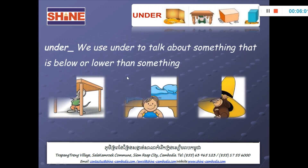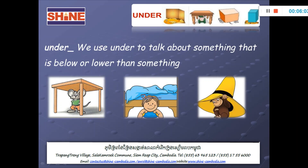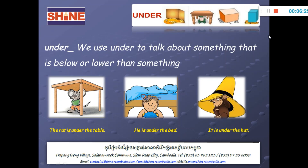Let's see the pictures — the rat, the boy, the monkey. Lower than something. The rat is under the table — lower than the table. Something refers to the table. He is under the bed. It is under the bed.